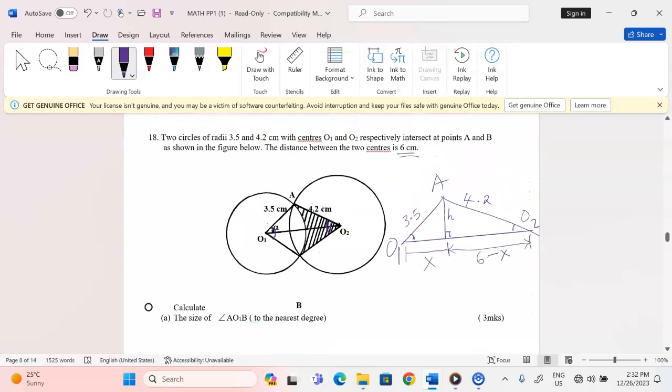Now you can agree with me that when we use Pythagoras theorem, we can express H and say H squared will be given by, considering the first triangle, 3.5 squared minus X squared. And H squared, considering the second triangle, can also be given by 4.2 squared minus 6 minus X squared.